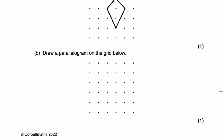Part B says draw a parallelogram on the grid below. A parallelogram has two pairs of parallel sides — the top is parallel to the bottom, and the left-hand side is parallel to the right-hand side. I sometimes like to think of it as a pushed-over rectangle. So that's a parallelogram.